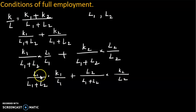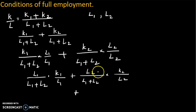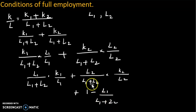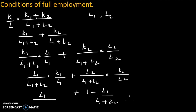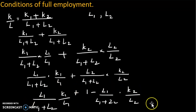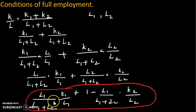This is the full employment condition. This expression indicates that the capital-labour ratio k by l has been split into the capital-labour ratio for the capital goods sector and the consumption goods sector. The wage-profit ratio determines the division of labour and machines between the two sectors.